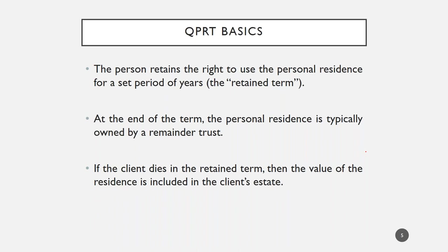At the end of the retained term, the residence passes pursuant to the terms of the trust. Typically, we will have it held in further trust for the benefit of other beneficiaries other than the grantor, though it is possible to have it pass outright as well. In many cases, especially if the client wants to use the residence after the retained term and pay fair market value rent, it makes more sense to have the asset held in a trust after the retained term, which can be a grantor trust — disregarded for income tax purposes — held for the benefit of the grantor's spouse and/or descendants.